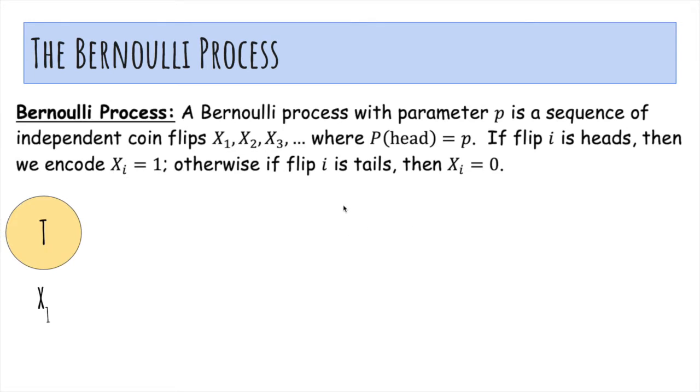Now let's talk about a Bernoulli process. A Bernoulli process with parameter p is a sequence of independent coin flips, X₁, X₂, X₃, and so on, where the probability of heads is p.